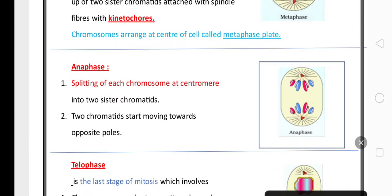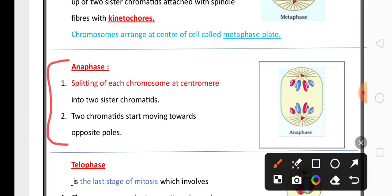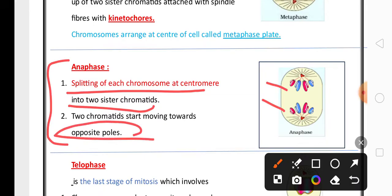The third phase is anaphase, important for two marks. Here we can find the splitting of chromosomes at the centromere into two sister chromatids. Those sister chromatids start moving to the opposite poles. That is the characteristic of anaphase.